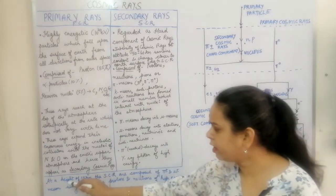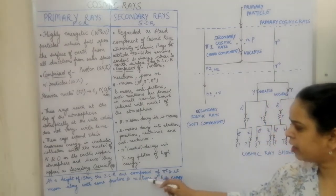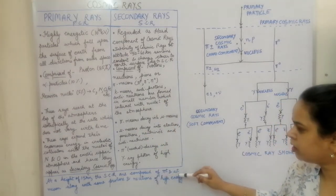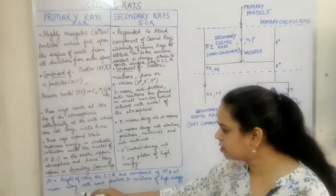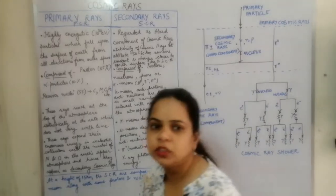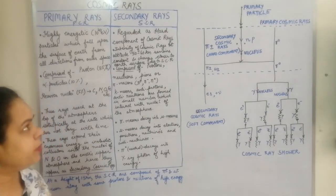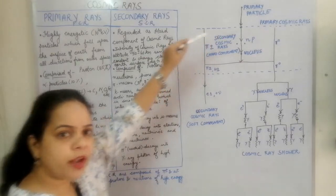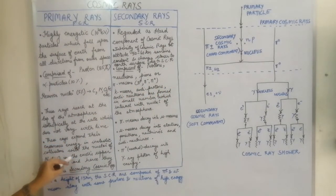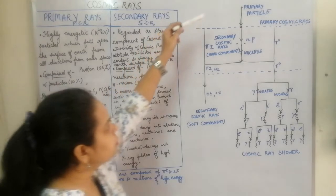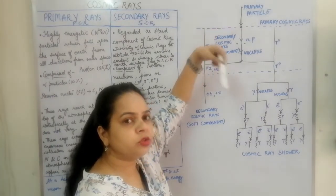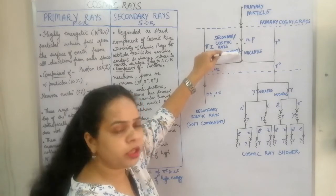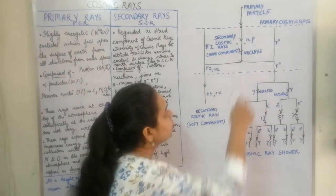This continuous production of electron-positron pairs and gamma rays results in cosmic ray showers. At a height of 15 kilometers, the secondary cosmic rays are composed of pi mesons, which decay into mu mesons. So pi-positive and pi-negative decay into mu-positive and mu-negative mesons, along with some high energy protons and neutrons. Looking at the chart: the primary particle from outer space interacts with the nitrogen and oxygen in the upper atmosphere, leading to secondary cosmic rays — neutrons and protons — which further interact with atmospheric nuclei to produce pi mesons and mu mesons.